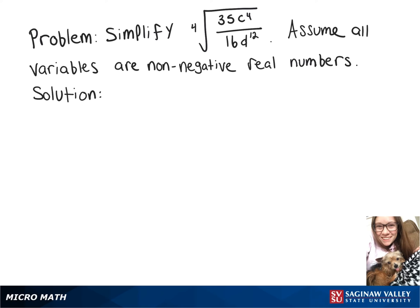We're going to simplify this expression, so let's start by breaking up our fourth root and rewriting this as the fourth root of 35 times the fourth root of c to the fourth over the fourth root of 16 times the fourth root of d to the twelfth.